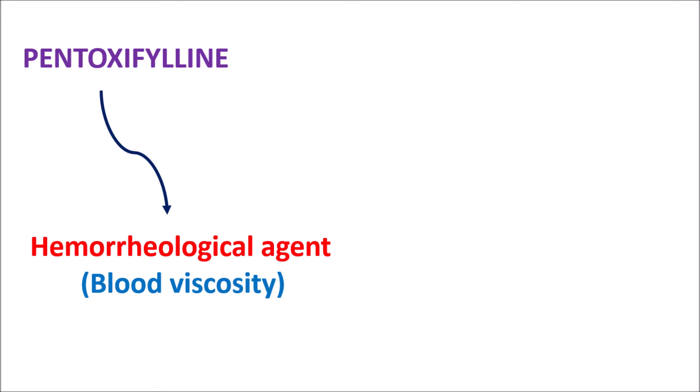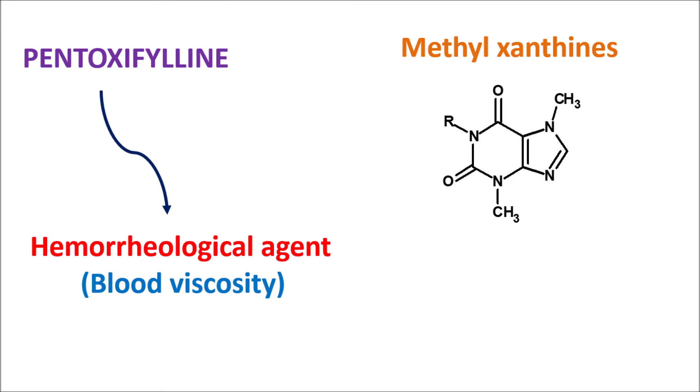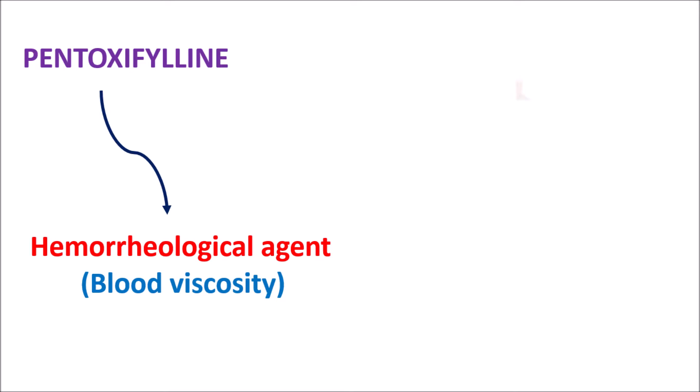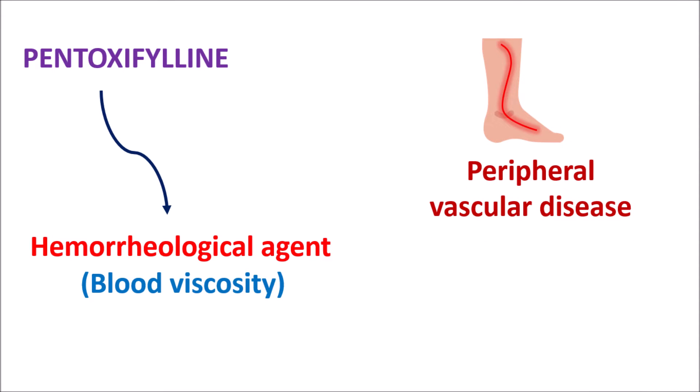Pentoxyphilin is one of the methylxanthines, having a structure similar to well-known methylxanthines like caffeine, theophylline, and theobromine. Among this category, Pentoxyphilin is the drug used to change blood viscosity, and this medication is particularly used in the treatment of peripheral vascular disease. In people with reduced blood flow and increased risk of clotting, Pentoxyphilin can be given to increase blood flow by changing blood viscosity. That's why it is called a hemorrheological agent.